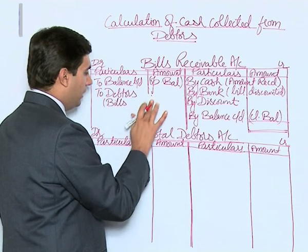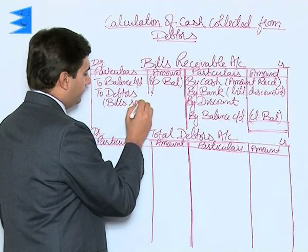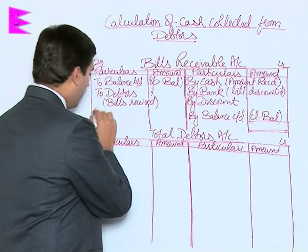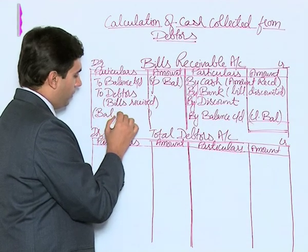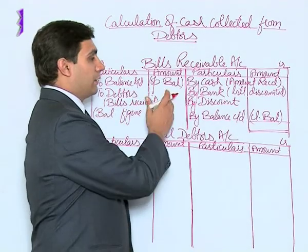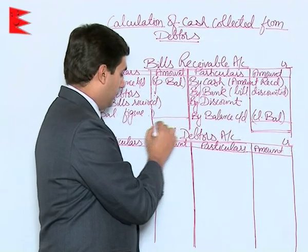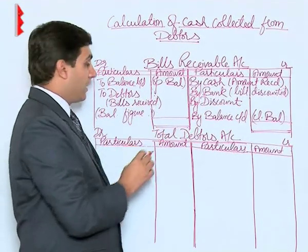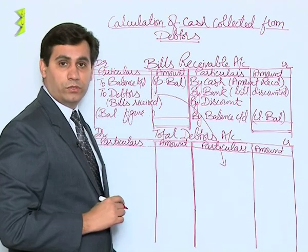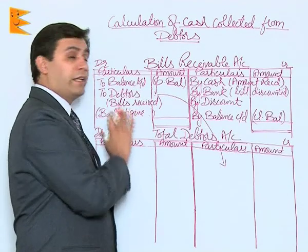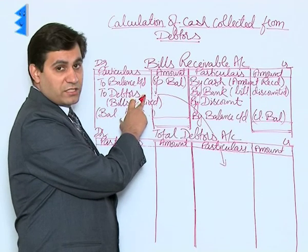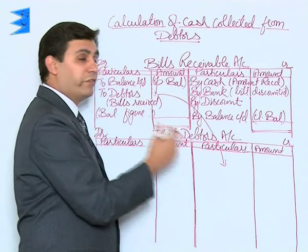After totaling the credit side and subtracting the debit side total, the balancing figure we get represents fresh bills received during the year — that is, debtors. This balancing figure is not given in the question; it is calculated. This amount is then transferred from the debit side of the bills receivable account to the credit side of the debtors account, reflecting the double-entry aspect.